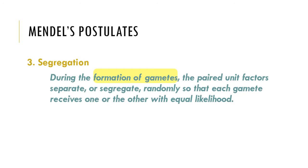Mendel's third postulate talks about the segregation of unit factors during gamete formation. It states that during the formation of gametes, the paired unit factors separate or segregate randomly so that each gamete receives one or the other with equal likelihood. The concept of segregation has been explained extensively in the video lesson on meiosis, so we will not be dwelling on this topic any longer.